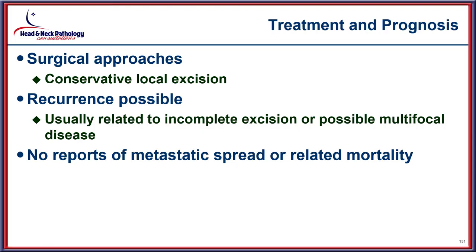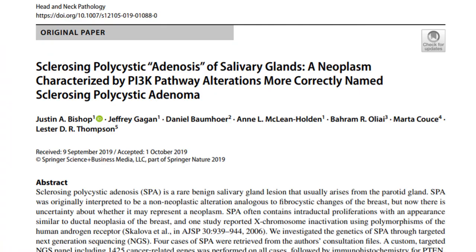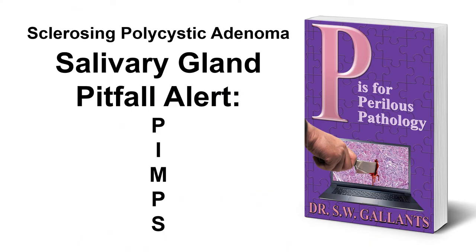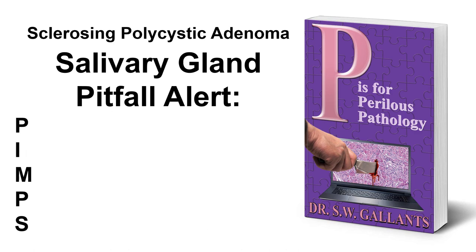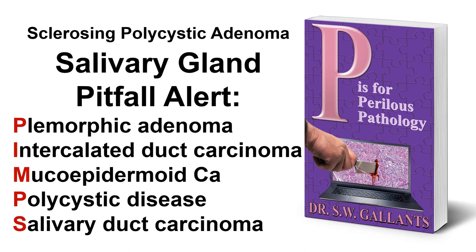Surgical excision is the treatment of choice, with recurrence possible if not completely excised. Although sclerosing polycystic adenosis was the name used in the past, sclerosing polycystic adenoma should be utilized moving forward. With the salivary gland pitfall alert and the PIMP mnemonic — pleomorphic adenoma, intercalated duct carcinoma or adenoma, mucoepidermoid carcinoma, polycystic disease, and salivary duct carcinoma — you can remember all the components of the differential for sclerosing polycystic adenoma.